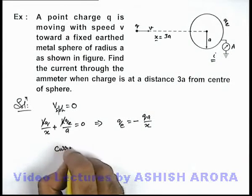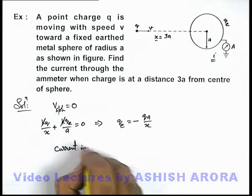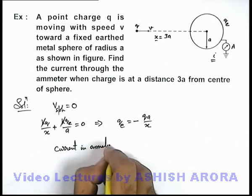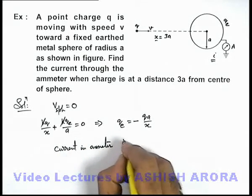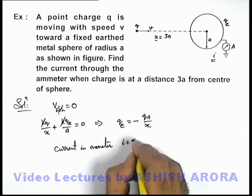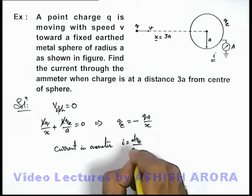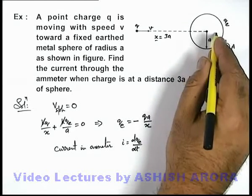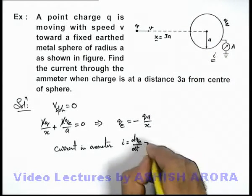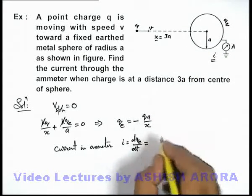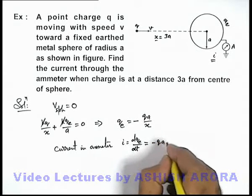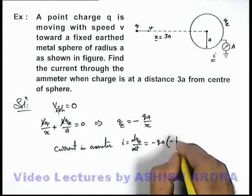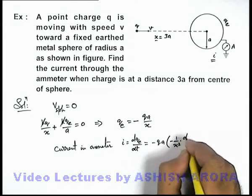And here we can write the current in ammeter should be equal to dqe by dt because it'll be the current, the rate at which the charge on sphere is continuously changing. So if we differentiate this expression, this will be minus qa and derivative of 1 by x will be minus 1 by x square, dx by dt.